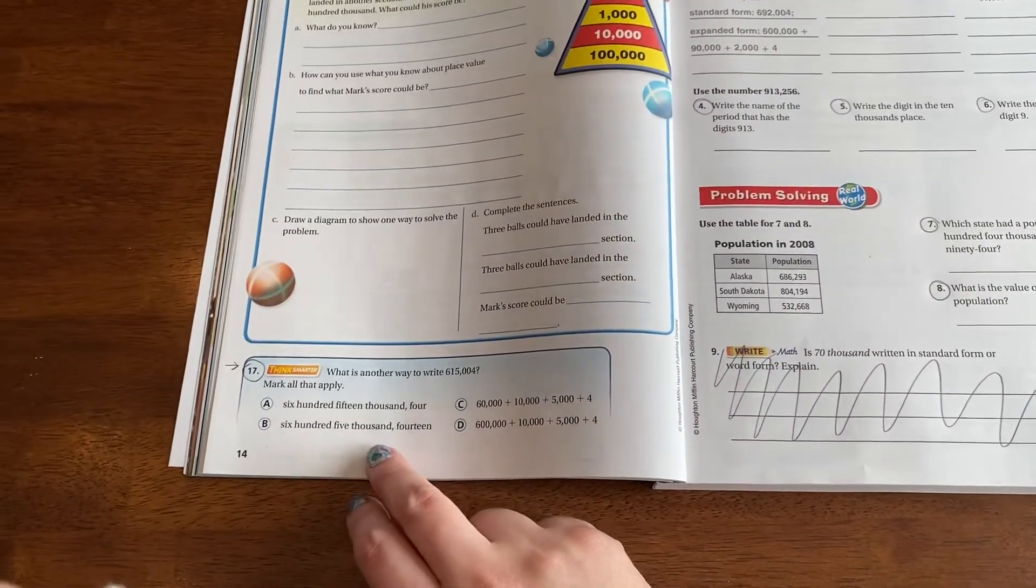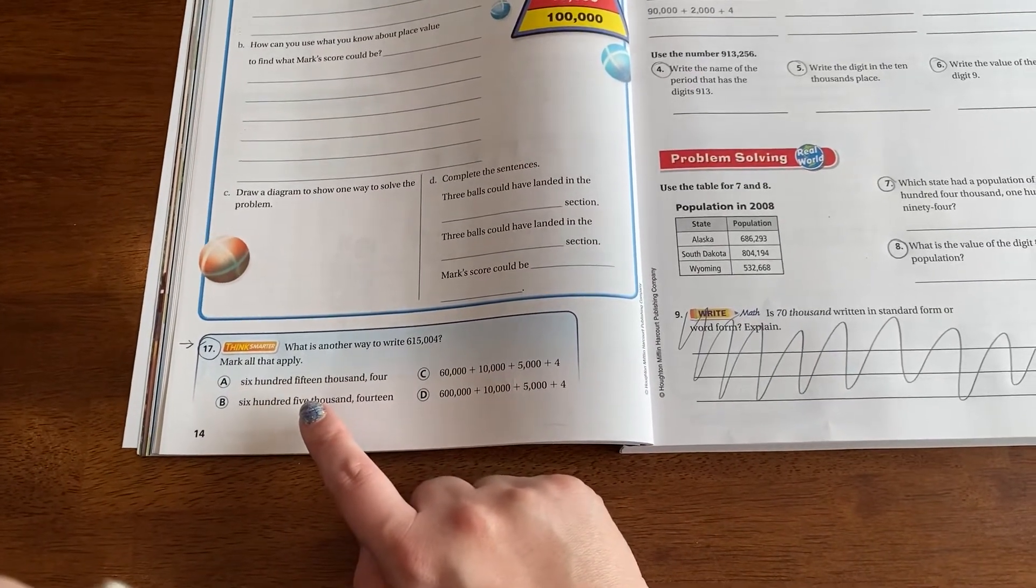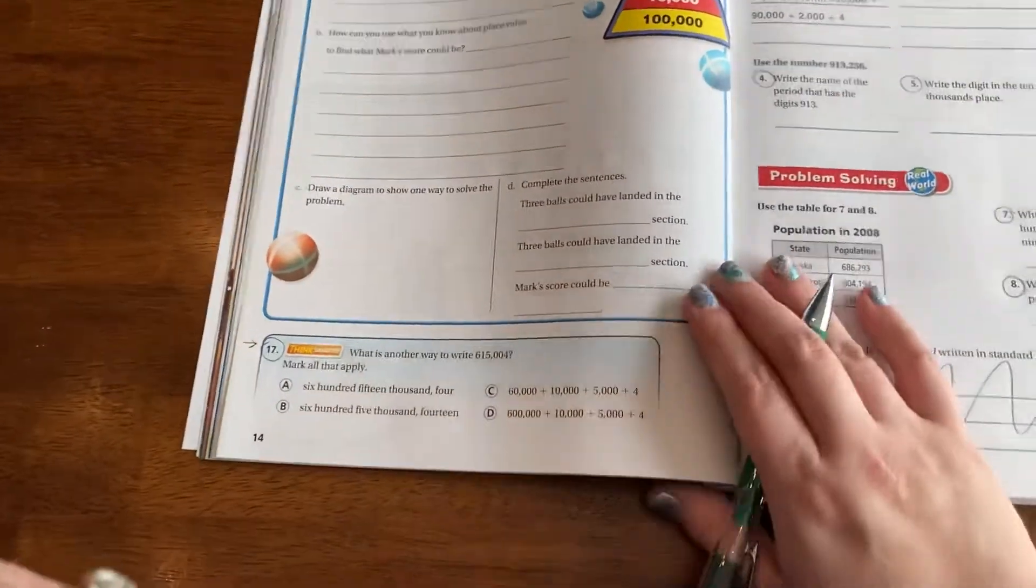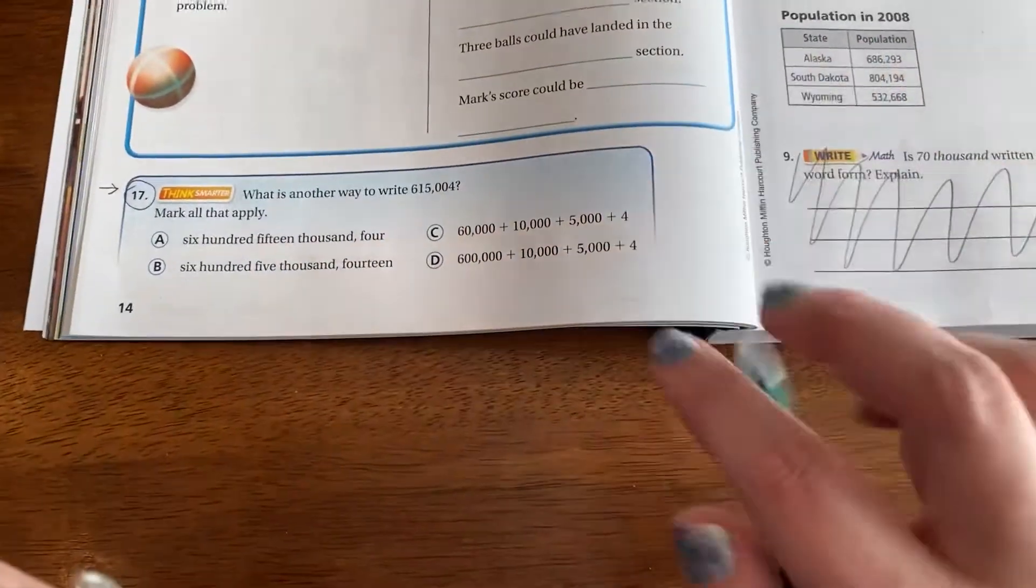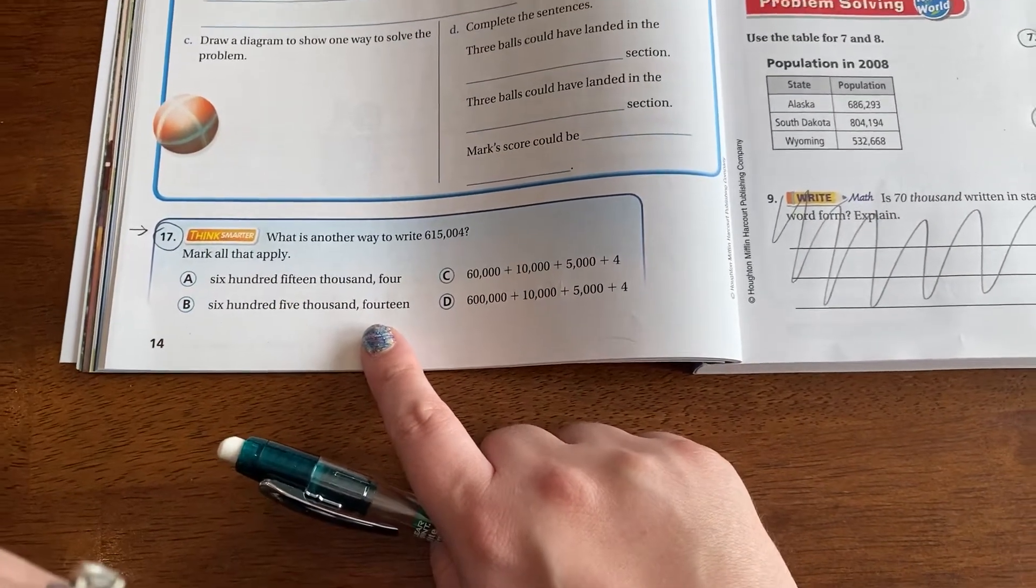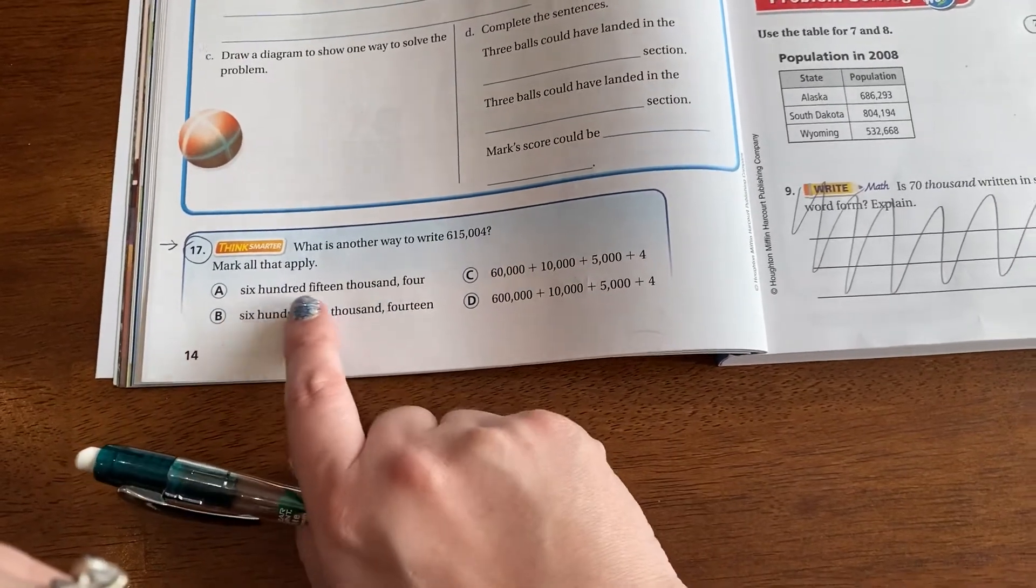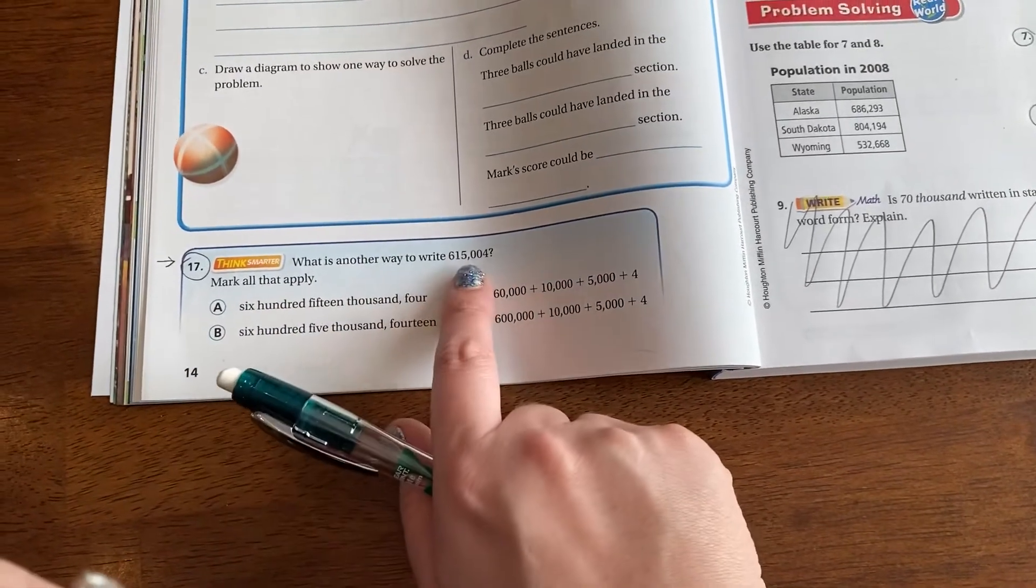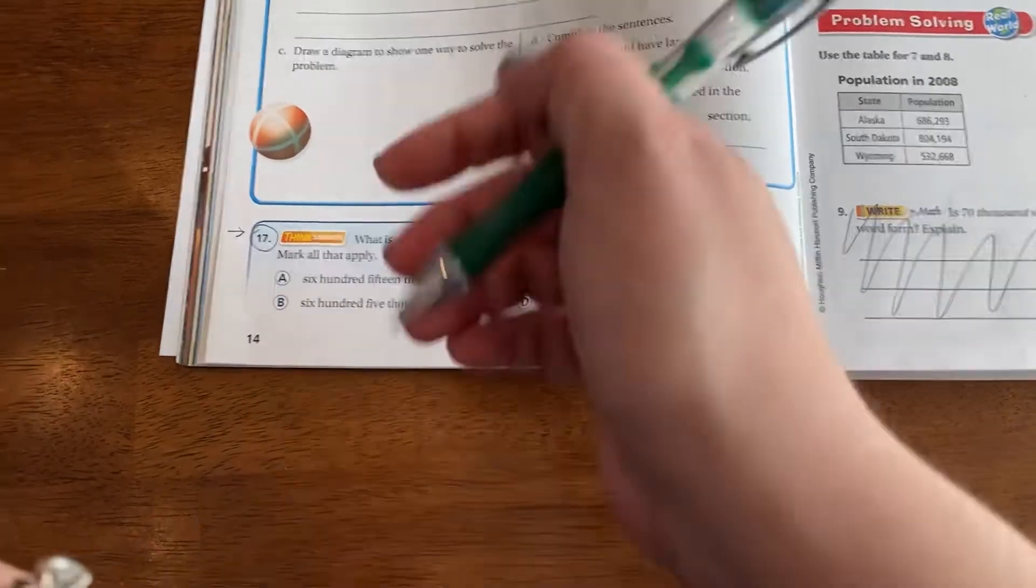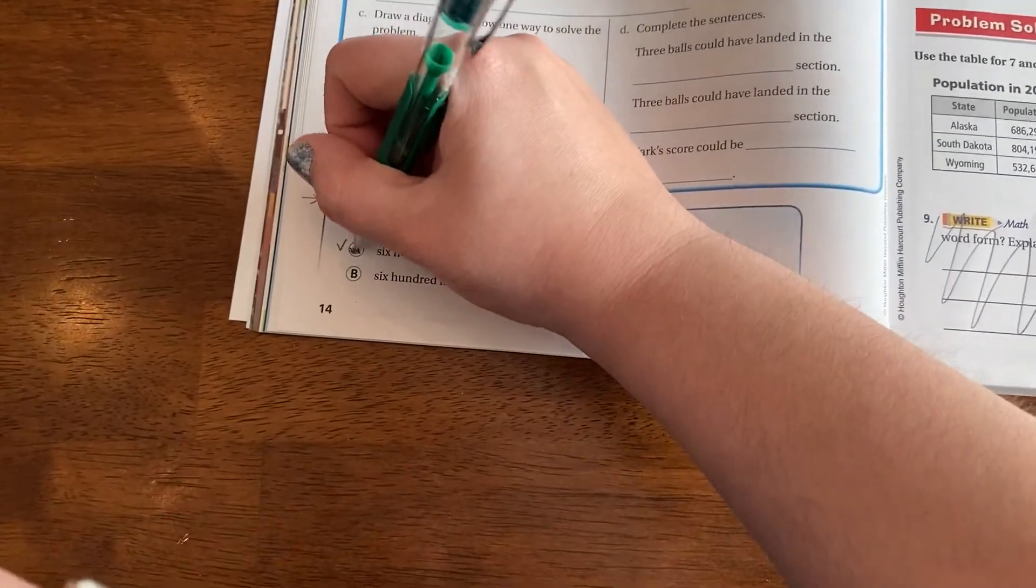So this one asks, mark all that apply. These questions can be a little tricky because there's more than one answer. So we have to examine all the answers before we choose. So this one says, what is another way to write 615,004? I'm going to look at the word forms first. This one says 615,004. Does that match? 615,004. Yep, that matches. So that one is probably true.